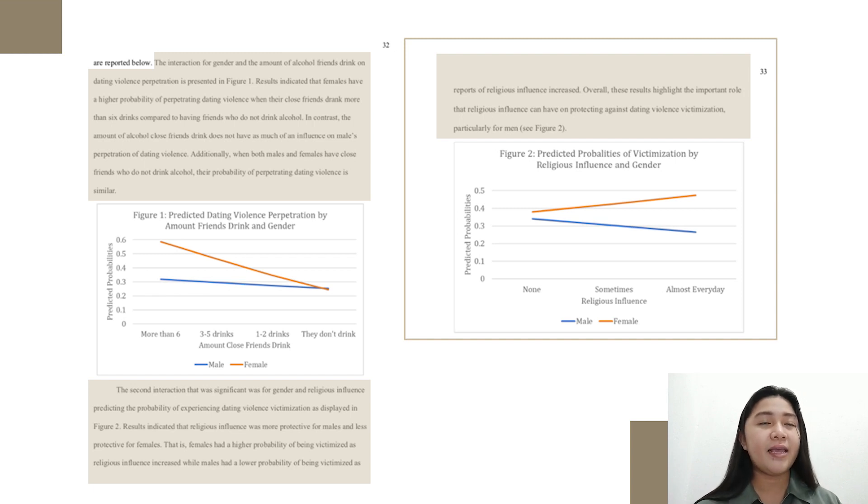while males had a lower probability of being victimized as reports of religious influence increased. Overall, these results highlight the important role that religious influence can have on protecting against dating violence victimization, particularly for men, as what this figure 2 data presented.